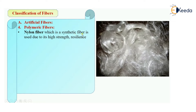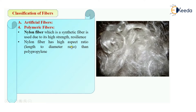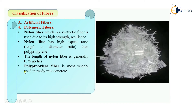The first type is nylon fibers, which are synthetic fibers. Synthetic fibers are textile fibers made by chemical synthesis. They are used because of their high strength and good resilience — resilience being the capacity to recover from difficult loads, or simply toughness. Nylon fibers will have a high aspect ratio, which is the ratio of length to diameter, higher than polypropylene fibers. The length of nylon fiber is generally 0.75 inches.